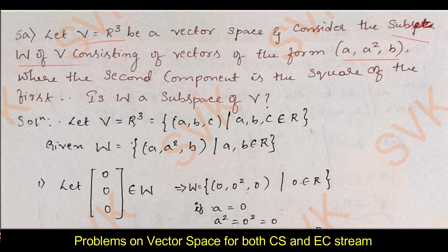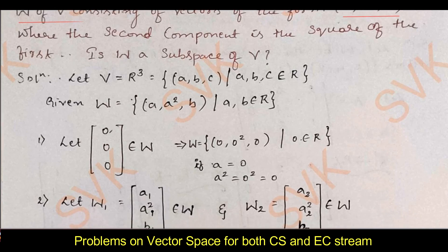Moving on to the solution: let V = R³ = {(a,b,c) such that a,b,c ∈ R}, and W is defined as {(a, a², b) such that a,b ∈ R}. First, I am going to prove the null vector condition. Consider a = 0, b = 0, giving (0, 0, 0) which belongs to W, because a = 0 and a² = 0 as well. Therefore the first condition is satisfied.